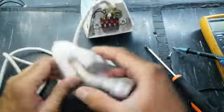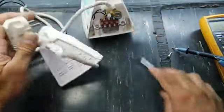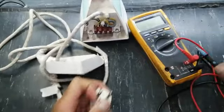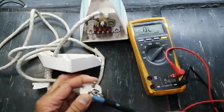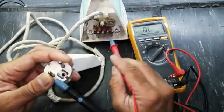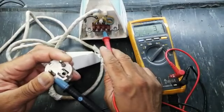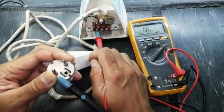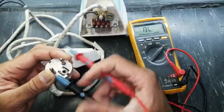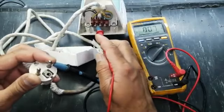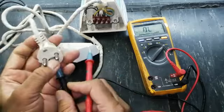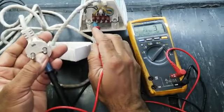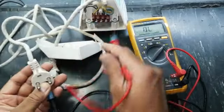First of all, if you want to test the cable, we can test the power cable. Either our power cable is working or not. Set it to continuity. Connect one lead to one terminal. One lead is here. Second lead. Connect it to ground pin. So power cable is good.